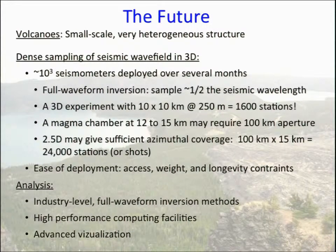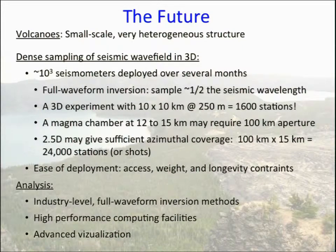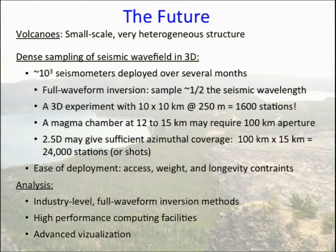I want to finish by pointing towards the future. Recording the full wavefield is going to be incredibly powerful for volcanoes. Volcanoes have very small-scale, very heterogeneous structure — this juxtaposition of low and high velocities and three-dimensionality makes it a difficult problem, and the magma bodies are also small. This requires dense sampling of the wavefield in three dimensions — you can see the limitations of our 2D line. It will require on the order of 10³ seismometers deployed for several months to collect teleseisms. For full waveform inversion, you need to sample half the seismic wavelength. A 3D experiment that's 10 by 10 kilometers at 250-meter spacing would require 1,600 stations.